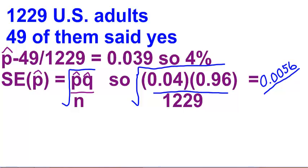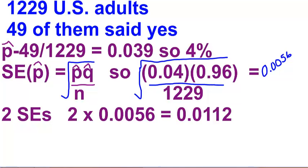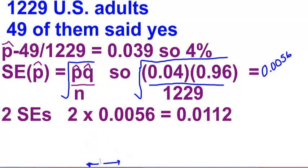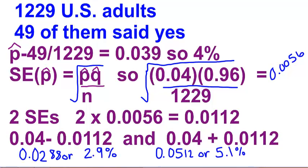The next thing we want to do is take it out two standard errors in each direction. So we multiply 0.0056 by 2 and get 0.0112. On our bell-shaped curve, with p in the center, we go out two standard errors to the right by adding to our p-hat, and two standard errors to the left by subtracting. So we compute 0.04 minus 0.0112 and 0.04 plus 0.0112. We get the same thing we got on the calculator: 2.9% and 5.1%.